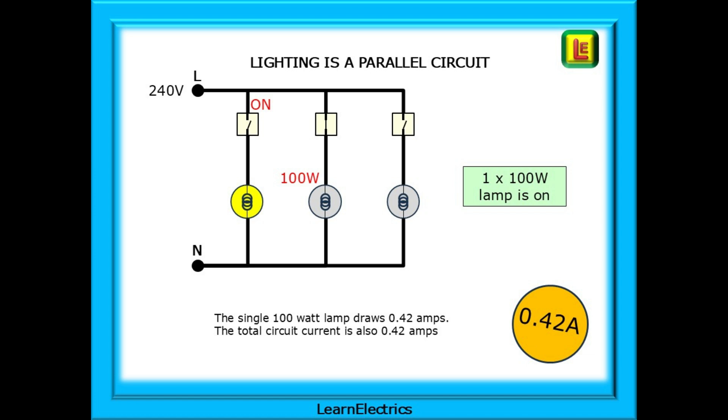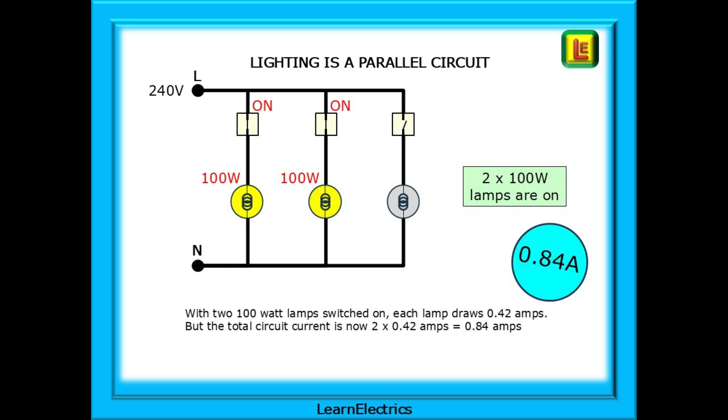With its two companion lamps turned off, this single 100 watt lamp draws 0.42 amps and the total circuit current is also 0.42 amps. With two 100 watt lamps switched on, each lamp draws 0.42 amps. But the total circuit current is now 2 times 0.42 amps, which is 0.84 amps, two lamps twice the current.